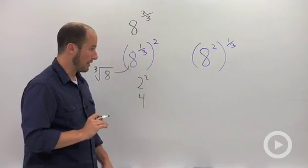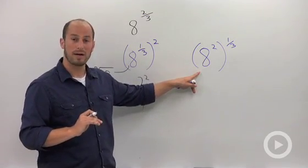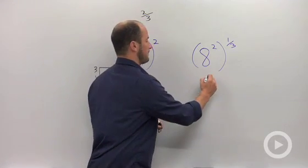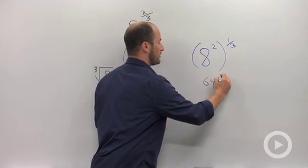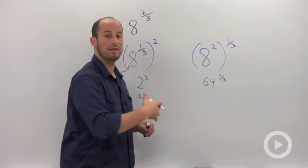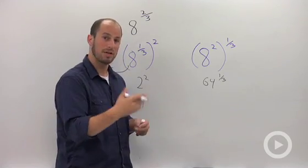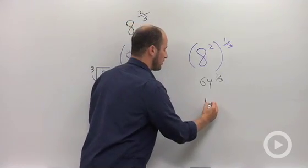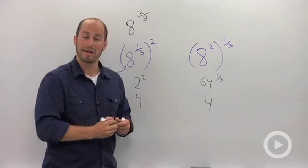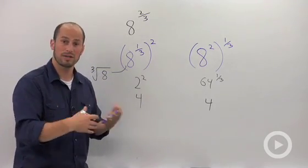Doing it the other way: 8 squared is 64. 64 to the 1/3—again, the 1/3 is just the same thing as the cube root. Cube root of 64 is just 4. Obviously we don't have to do this twice; I'm just showing you our two options.